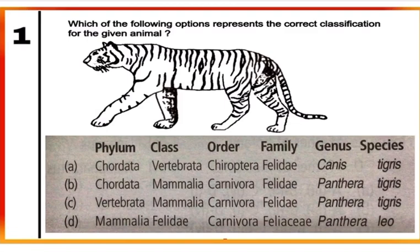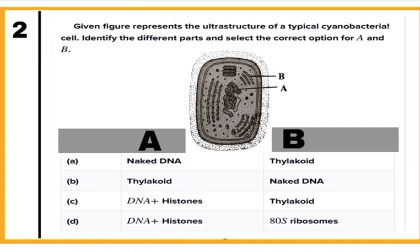Question 2: The given figure represents the ultrastructure of a typical cyanobacterial cell. Identify the different parts and select the correct option for A and B. Cyanobacteria are eubacteria belonging to kingdom Monera and are also referred to as blue-green algae. They have chlorophyll A and thus are photosynthetic. In the figure, A is naked DNA which is the genetic material, and B are thylakoids which are the site of photosynthesis in cyanobacteria. Correct option is A.